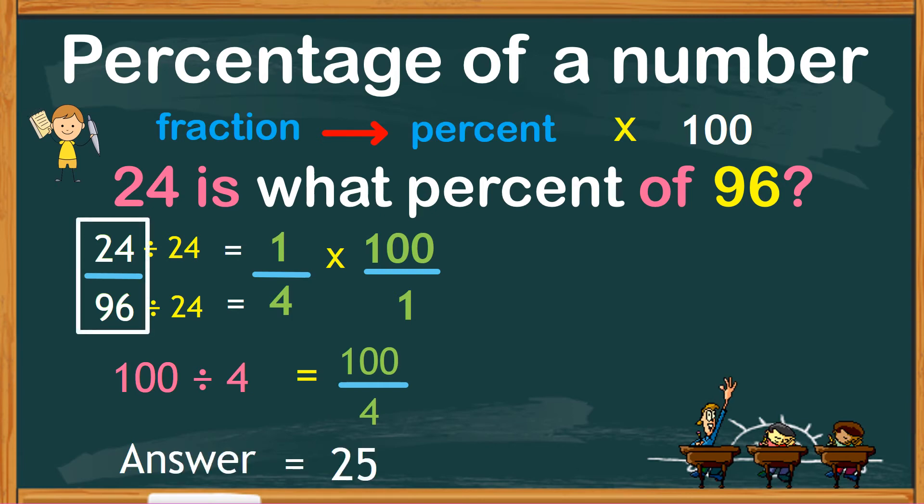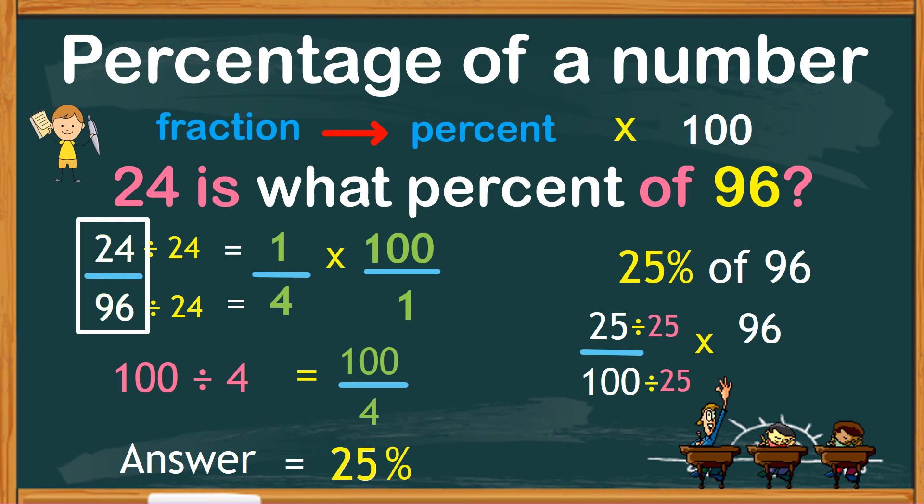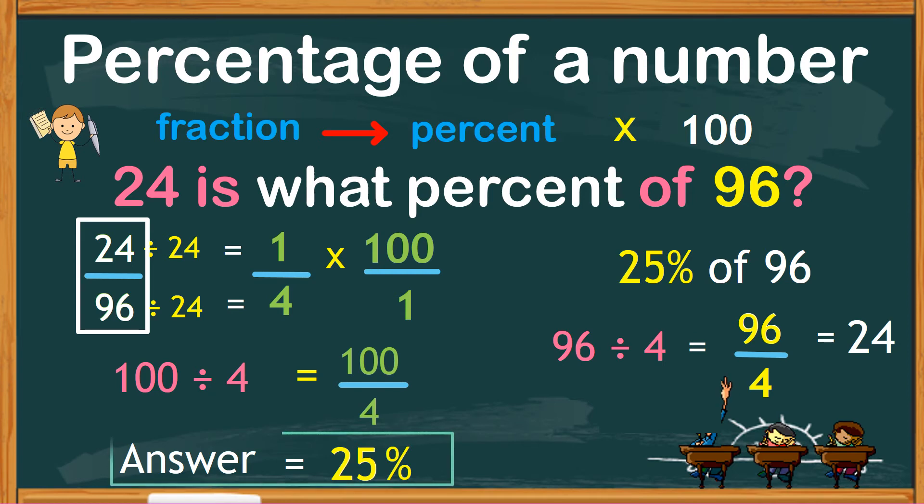Let's check if our answer is correct. Let's see if 25% of 96 is 24. So, 25% can be expressed as 25 over 100 times 96. We can still reduce 25 over 100 into a much smaller number by dividing it by 25. We get an equivalent fraction of 1 over 4. We now have 96 over 4, or 96 divided by 4, which is 24. This means our answer is correct.